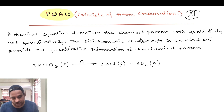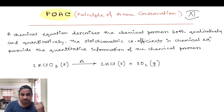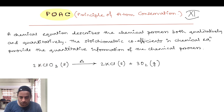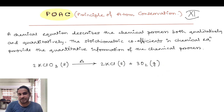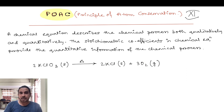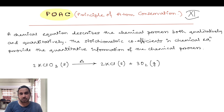A chemical equation describes the chemical process both qualitatively and quantitatively. What does the chemical equation mean qualitatively and quantitatively? For example, 2 mol KClO3 produces 2 mol KCl and 3 mol oxygen. The stoichiometric coefficients in a chemical equation provide the quantitative information of the chemical process.